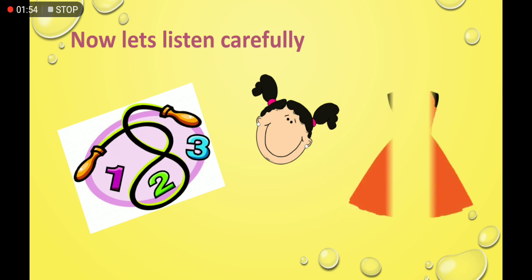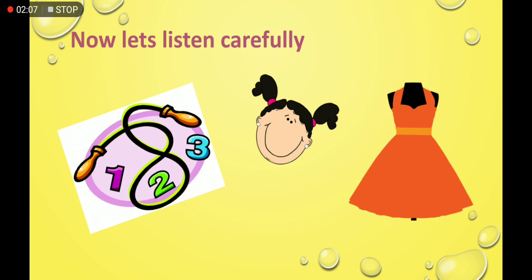Now let's start today's task. I am again reading this text, so please listen again. Fiza's skipping. She is wearing a red dress and no socks. She is quite small. She has black hair in bunches.